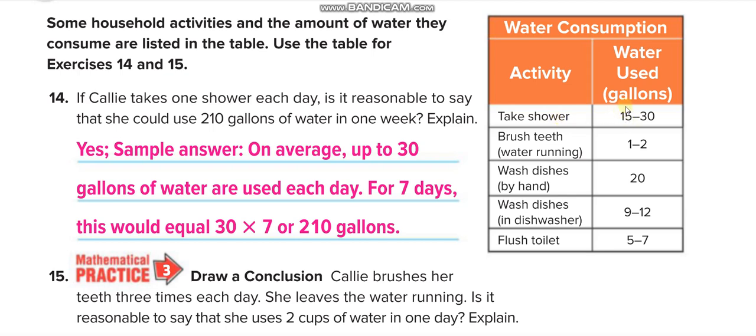Taking a shower uses 15 to 30 gallons. Brushing teeth with running water, which we shouldn't do, uses 1 to 2 gallons. Washing dishes by hand uses 20 gallons, washing dishes in a dishwasher uses 9 to 12 gallons. You can see that a dishwasher consumes less water, so we should use that. Flushing a toilet uses 5 to 7 gallons of water.